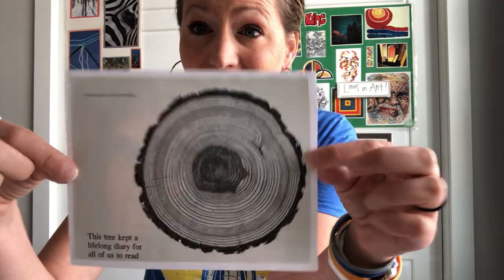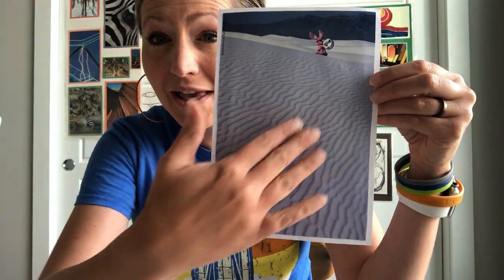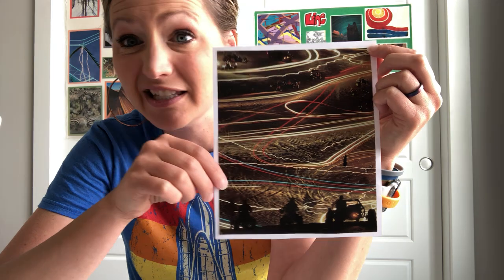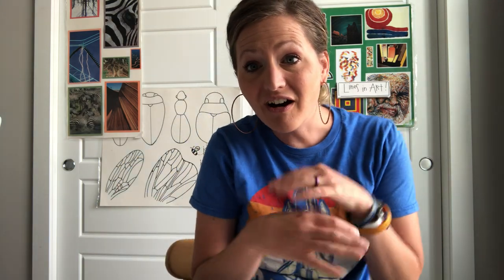There are zebras with lots of cool lines, the inside of a tree with all those tree rings in the stump — lines in nature are super cool. The wind can make lines inside sand in a desert or in snow. I've also got a photograph of lights moving across a sand dune at night — everywhere the lights moved, it created lines. Pretty cool.